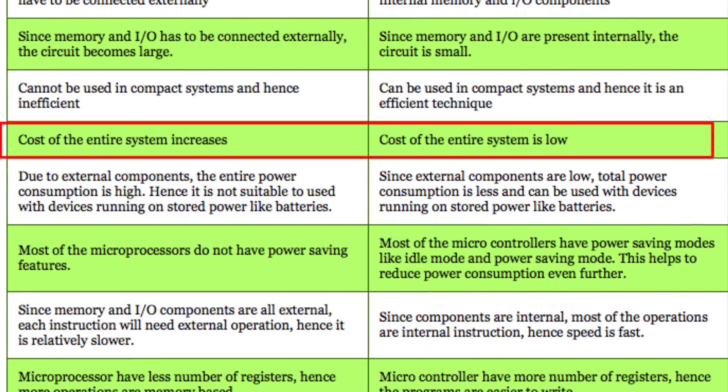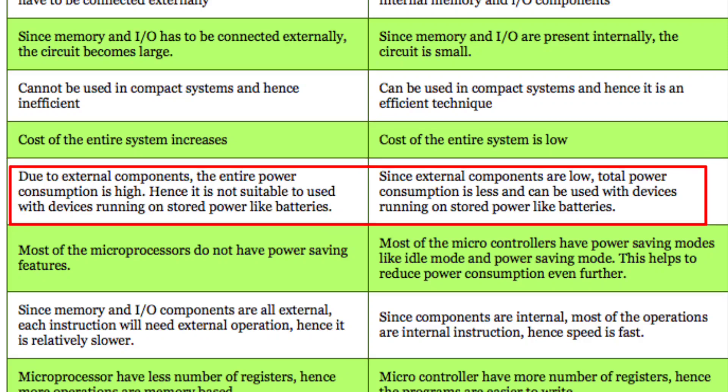Cost is a very important parameter. The cost is very high for a microprocessor-based system because all devices are connected externally. External components are numerous, and as a result, power consumption is also high.